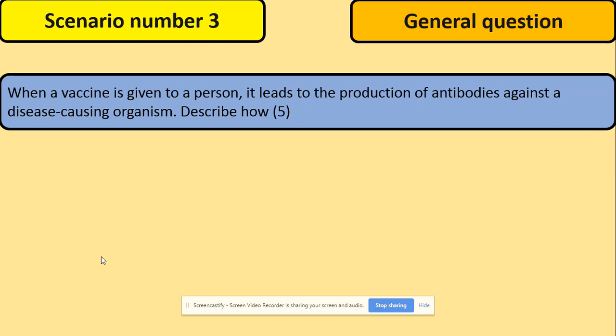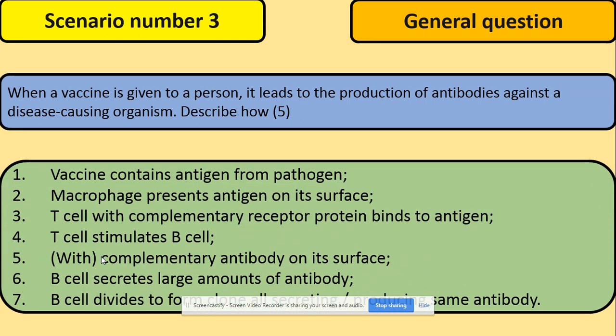Scenario number three: we'll look at the differences between general questions and specific questions. When a vaccine is given to a person and leads to the production of antibodies against a disease-causing organism — describe how — for five marks. That's a straightforward recall question with no tricks. Vaccine contains antigen from pathogen; macrophage or antigen-presenting cell presents antigen on its surface; T cell with complementary receptor protein binds to antigen; T cell stimulates B cell with complementary antibody on its surface; B cells secrete many antibodies and B cells divide to form a clone, each producing the same antibody. That's your model box-standard answer.